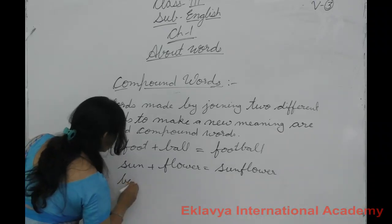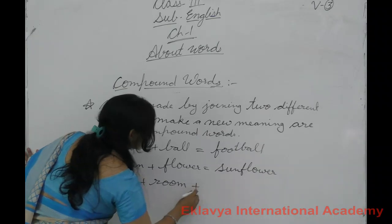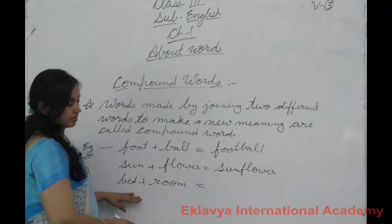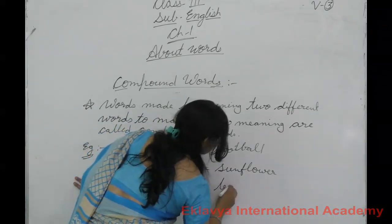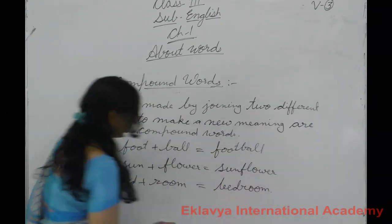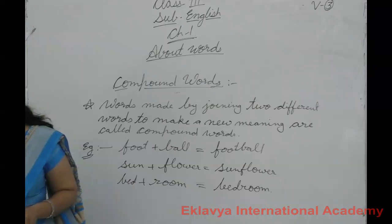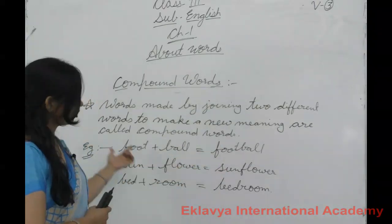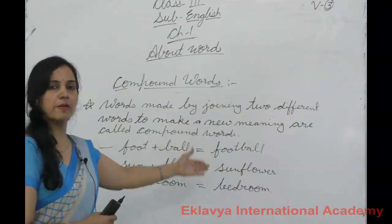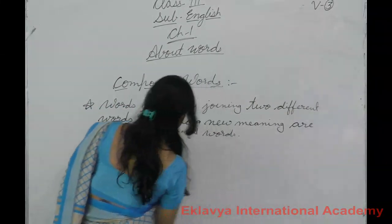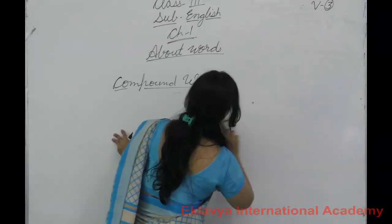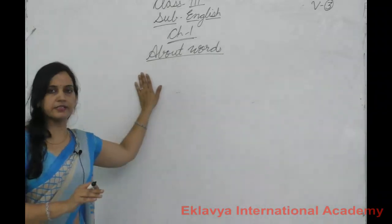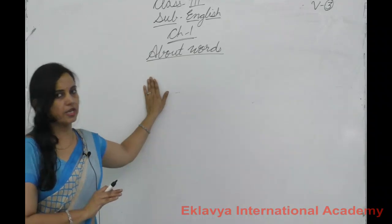Another example: bed plus room makes bedroom. Bed has its separate meaning and room also has a separate meaning, but together they form bedroom. So when we join two words to make a new meaning, that is called a compound word. Some exercises related to this chapter are given in your book — please complete them as homework. Thank you, students.